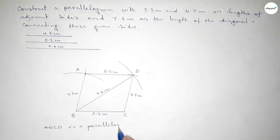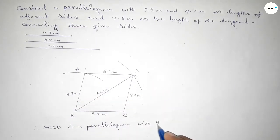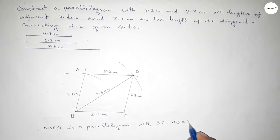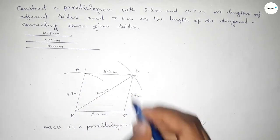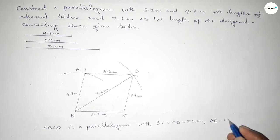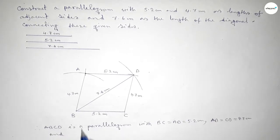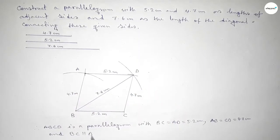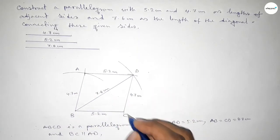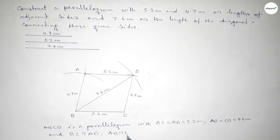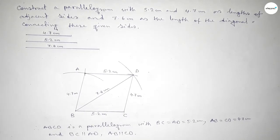Therefore ABCD is a parallelogram with sides AD equal to BC equal to 5.2 centimeter, and AB equal to CD equal to 4.7 centimeter, and diagonal BD equal to 7.6 centimeter. BC equal to AD and AB equal to CD. That's all — thanks for watching. If this video is helpful to you, please share it with your friends.